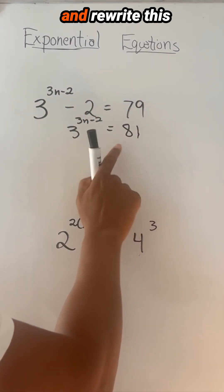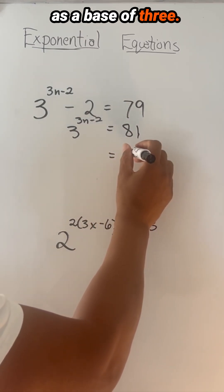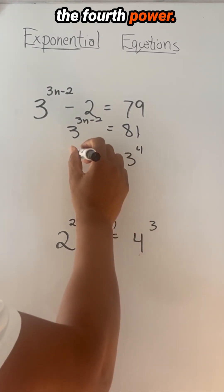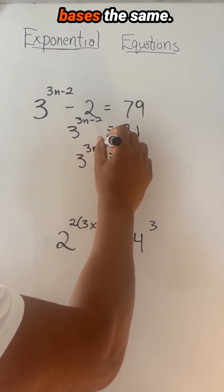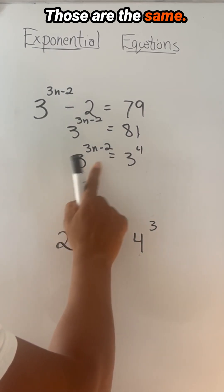Then I'm going to scroll over here and rewrite this as a base of three. That is three to the fourth power. The whole goal here is to get the bases the same. Those are the same.